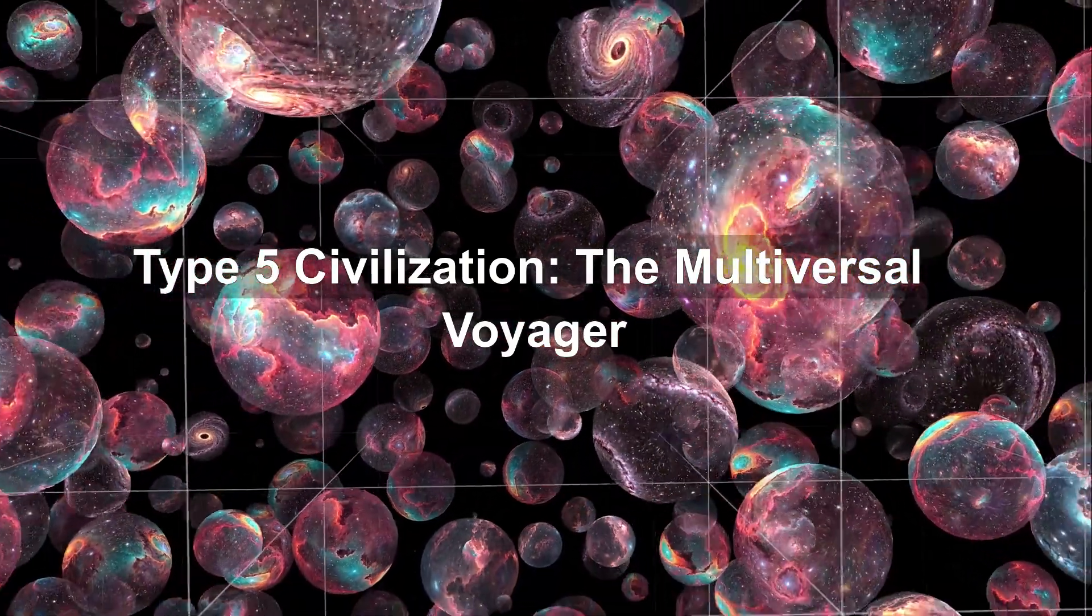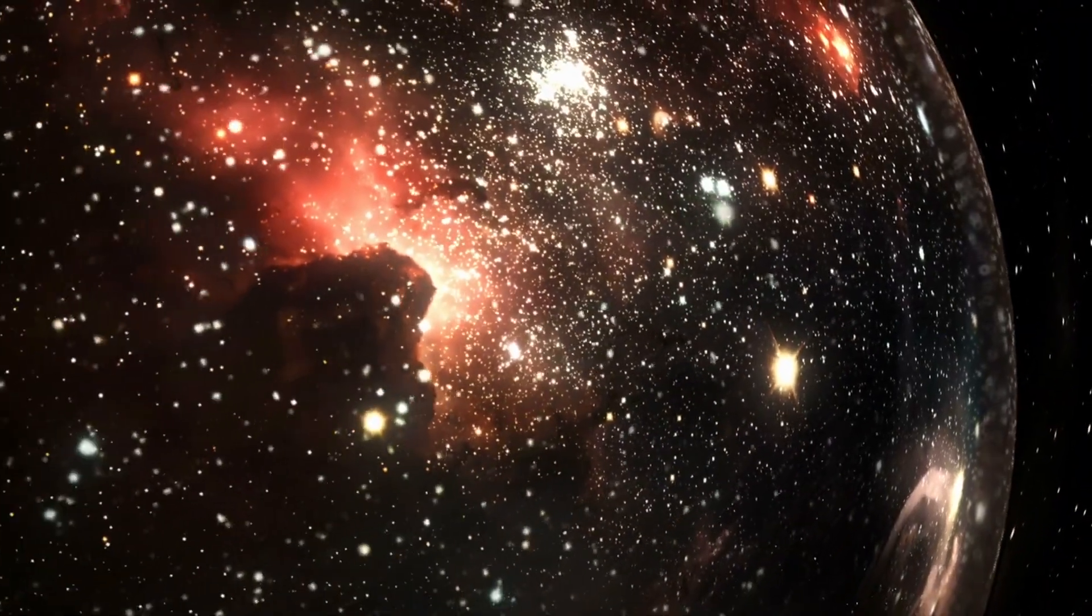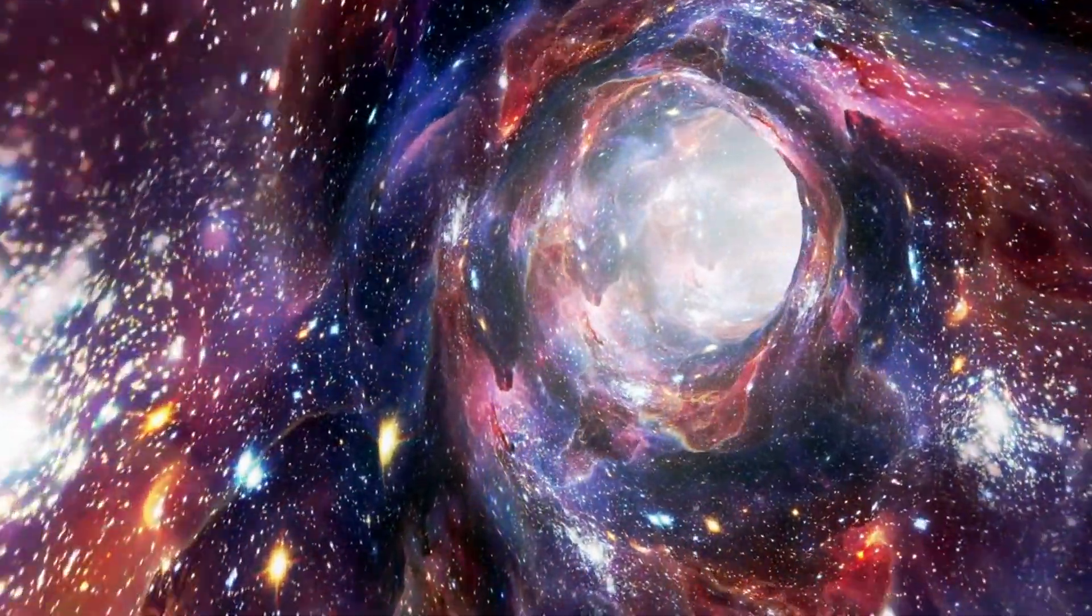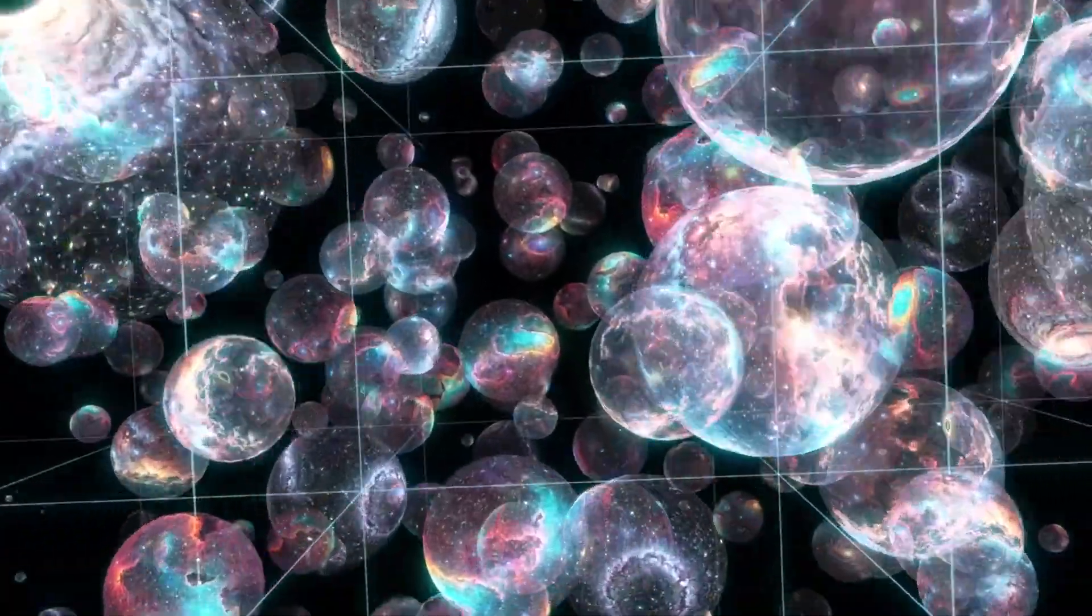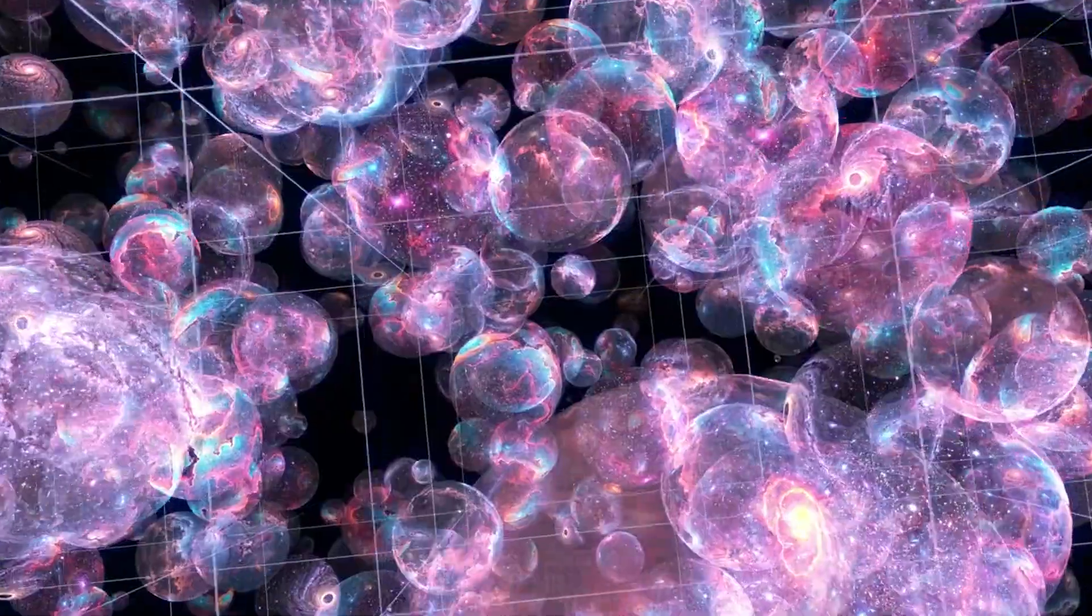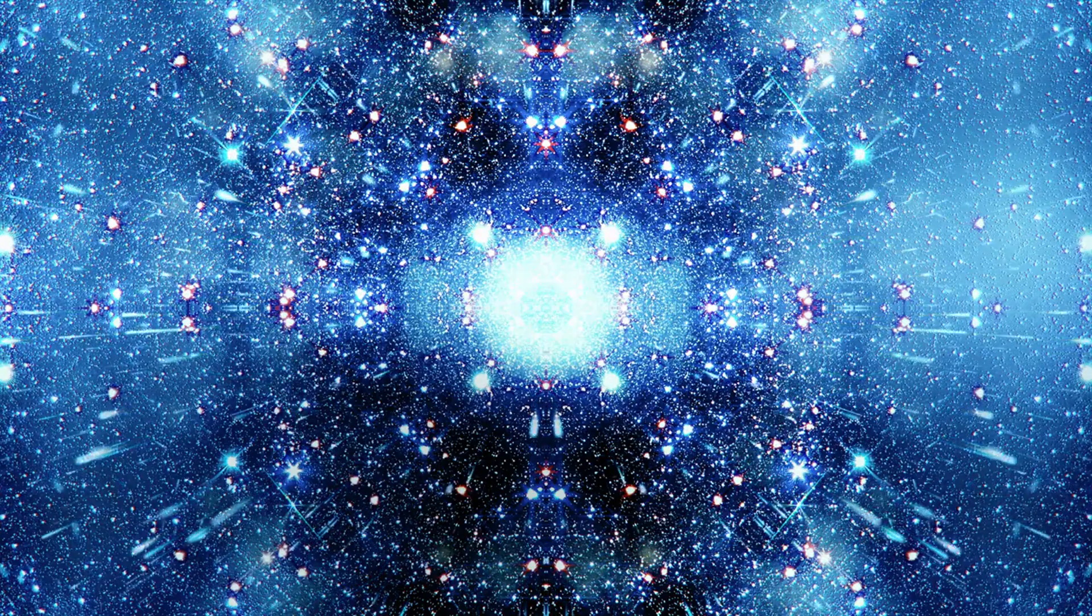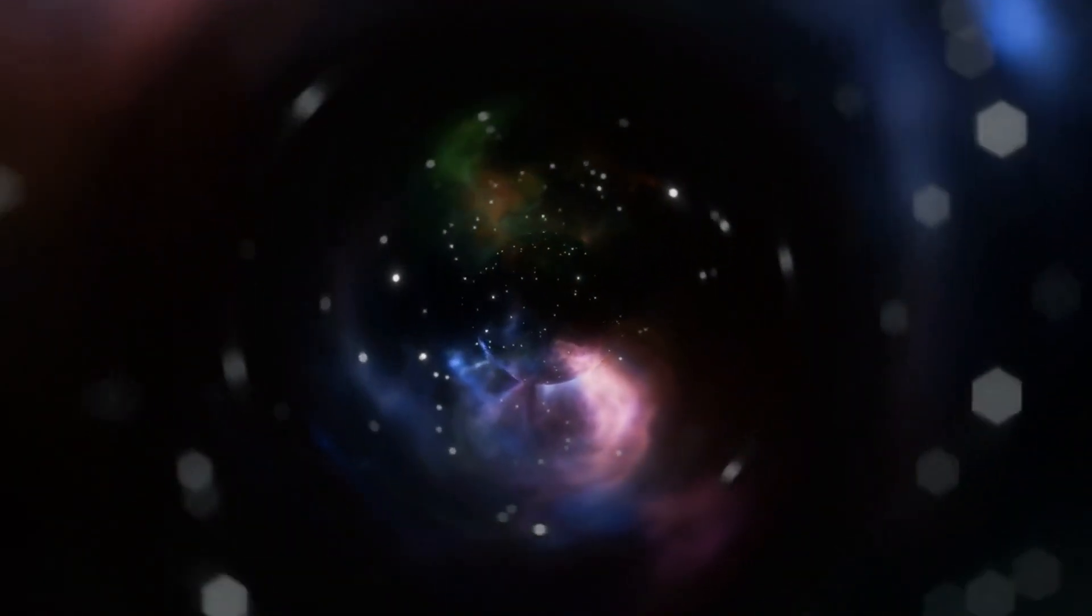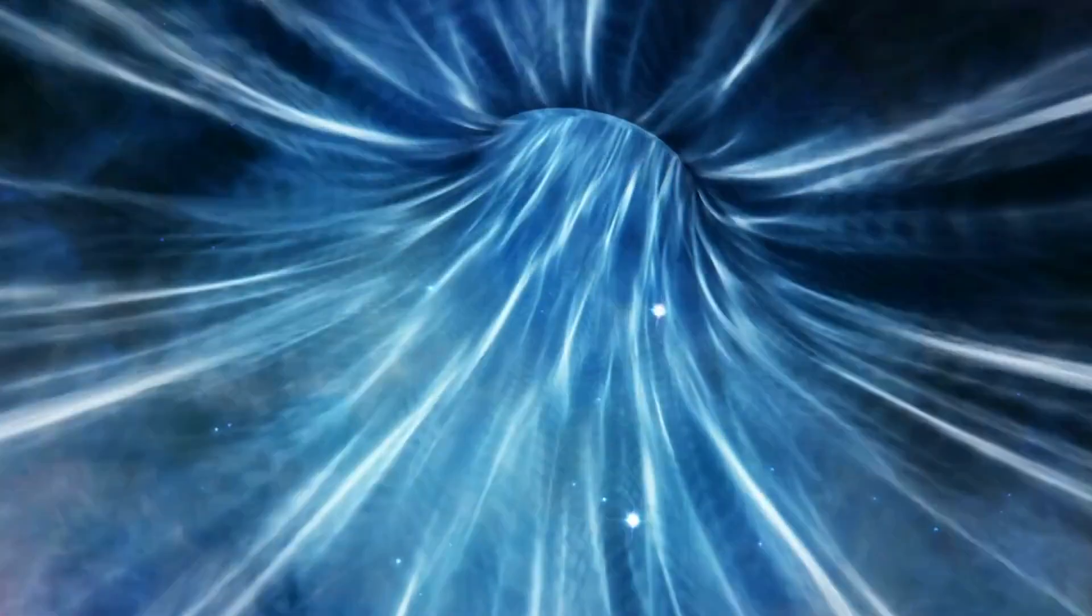Type 5 civilization: the multiversal voyager. One universe, not enough. Type 5 takes it up a notch. These civilizations can traverse the multiverse. They jump between realities, each with different laws of physics, different timelines, different versions of you. They understand dimensional travel, time loops, and alternate existences.